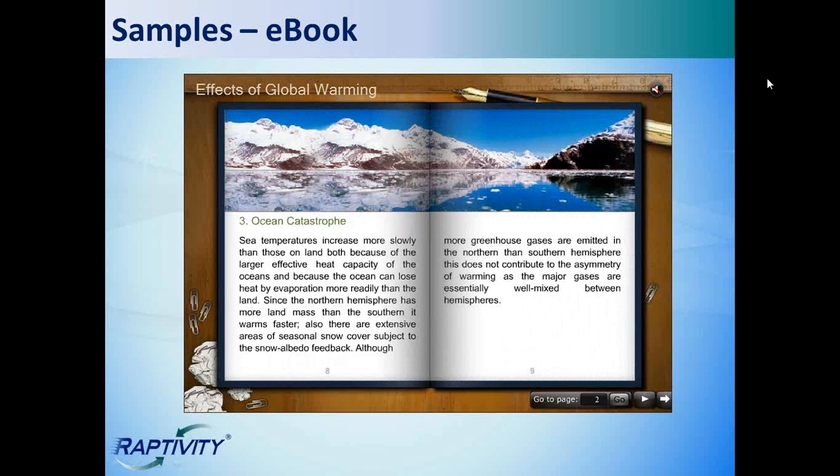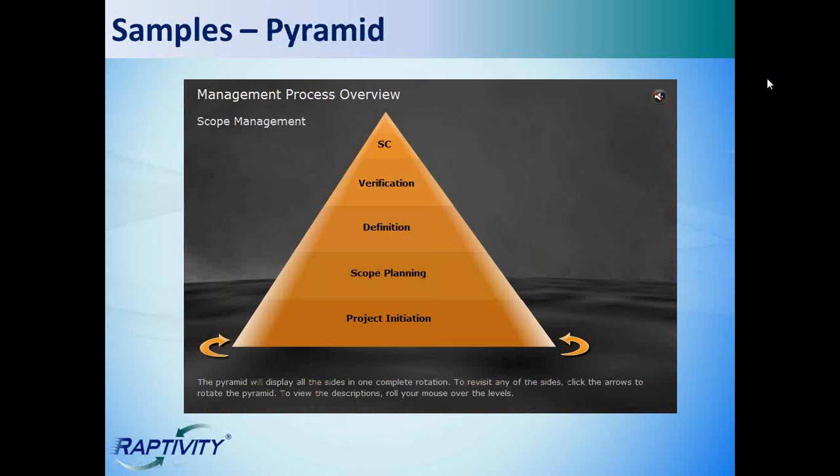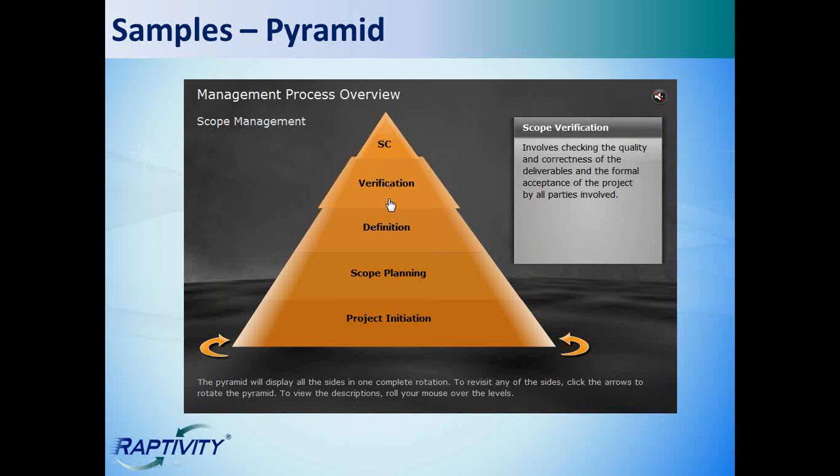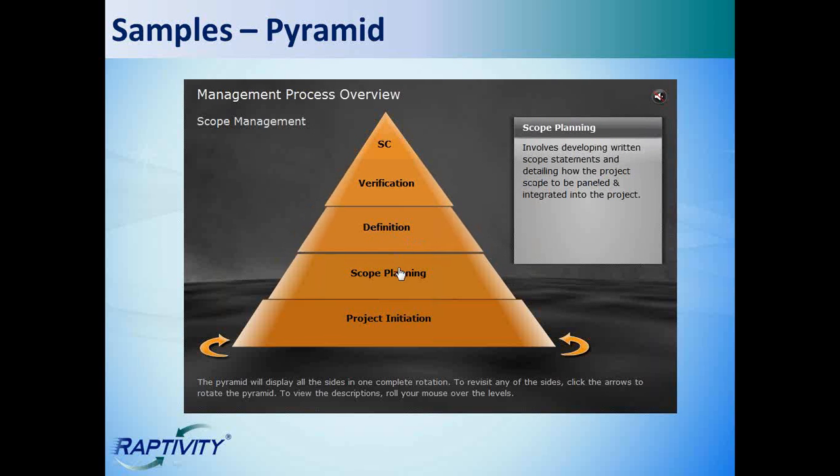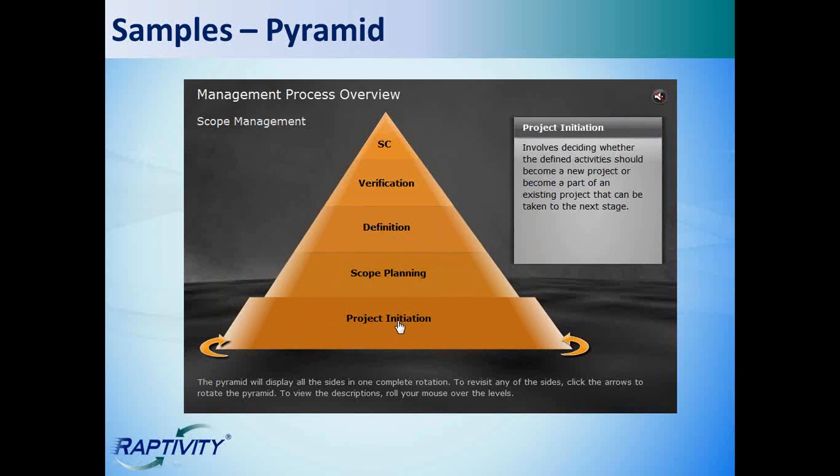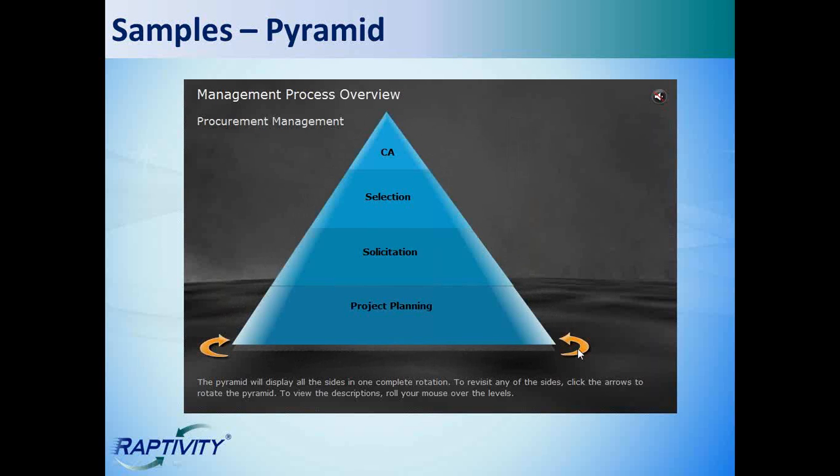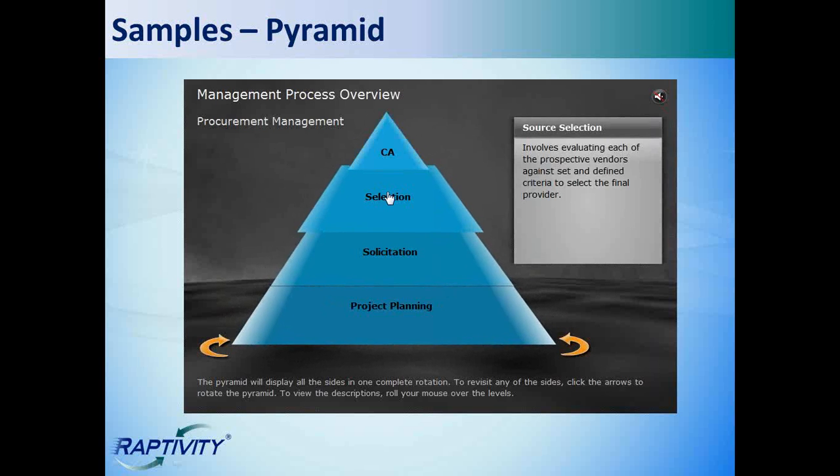Now there are many interactive diagrams in Raptivity, and this is just one of them, a pyramid. It's a great way to show hierarchical relationships. Now in this sample, the overall subject is management process overview. And the first side we're looking at here is particularly about scope management. And as we hover over each level, notice the pop-up box that appears with additional information. You can choose to have text or a video in this box. You also have the option of including audio. And now this pyramid rotates, so you can compare another process. Here we're looking at procurement management. And you can include up to four pyramid faces in this template.